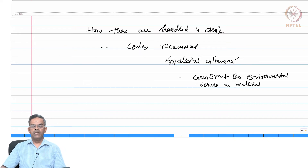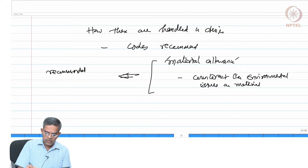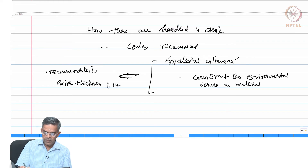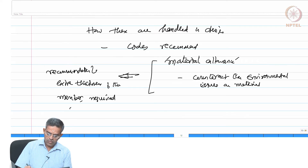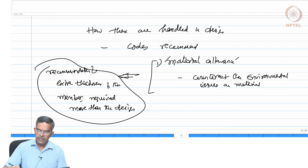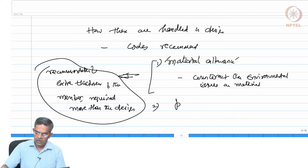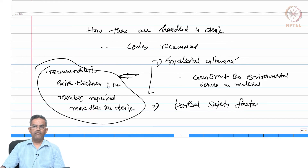Material allowance is the recommendation of extra thickness of a member required beyond the design requirement. Another way is the use of partial safety factors in the design procedure to account for these effects — this is not new, we have been doing this.